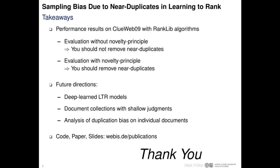To conclude, we derive two takeaways from our experiments on ClueWeb09. First, when training and evaluating learning to rank models without taking near-duplicates into account, you should not remove near-duplicates during training. But when evaluating under the novelty principle, you should remove near-duplicates. For future work, we ask how other learning to rank algorithms such as deep learning approaches behave under duplicate bias, and whether the same results hold on other datasets with only shallow judgments. We publish all resources related to our paper online. Thank you for your attention.